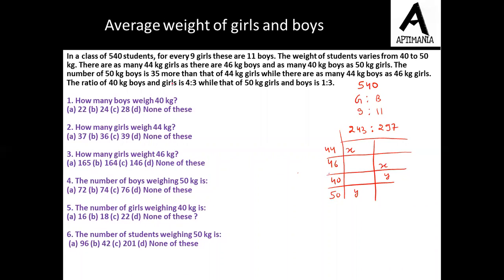The number of 50 kg boys is 35 more than that of 44 kg girls. So if we have x 44 kg girls, the number of boys of 50 kg is 35 more than x, so it must be x plus 35 then.